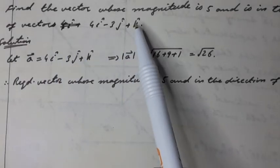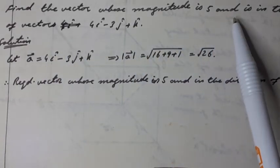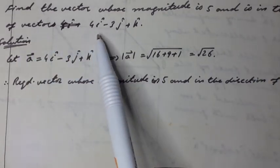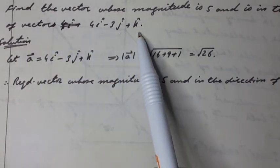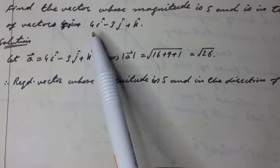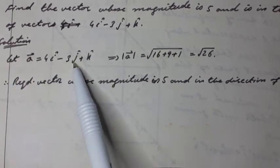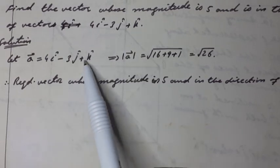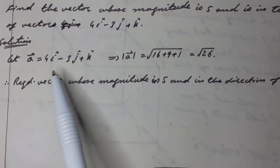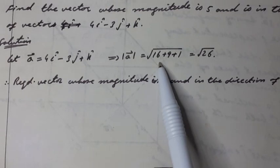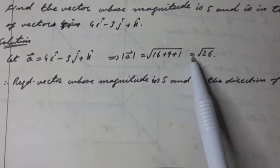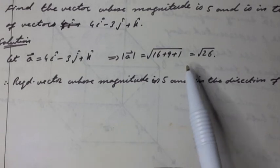Find the vector whose magnitude is 5 and is in the direction of vector 4î minus 3ĵ plus k̂. Solution: Let vector a equal to 4î minus 3ĵ plus k̂. This implies its magnitude is equal to the square root of 4² + (−3)² + 1², which is the square root of 16 + 9 + 1, equal to the square root of 26.